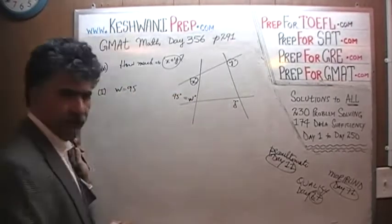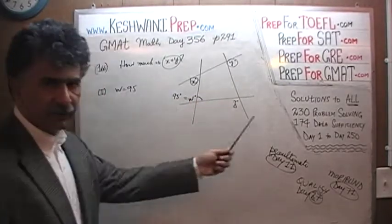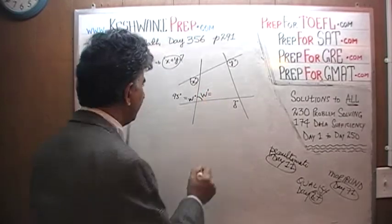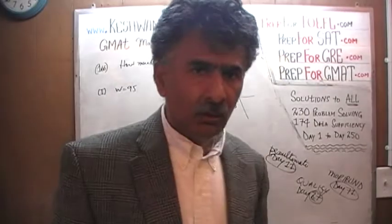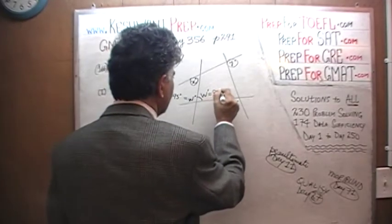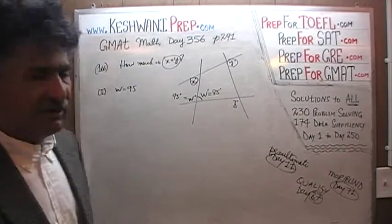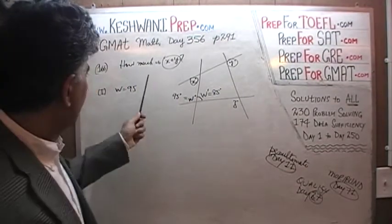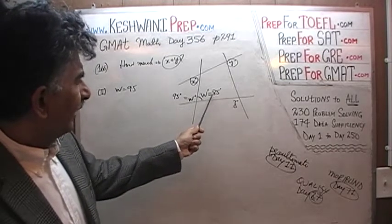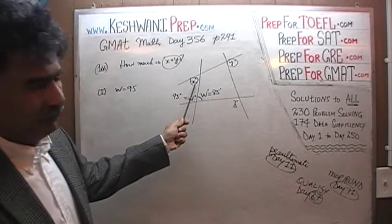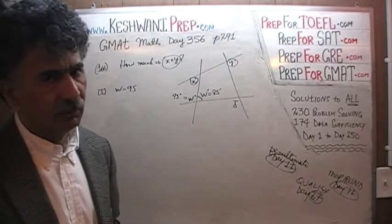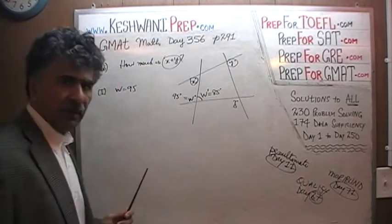If w is 95 degrees, then this inside angle — because a straight line makes 180 — let's call it w prime. W prime would have to be 180 minus 95, which is 85 degrees. Knowing that w prime is 85 degrees, is that going to get us anywhere? There is no way to figure out what x is from here, because the lines are not parallel. The first statement by itself does not do the job.